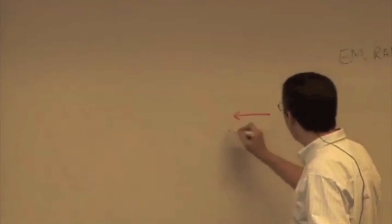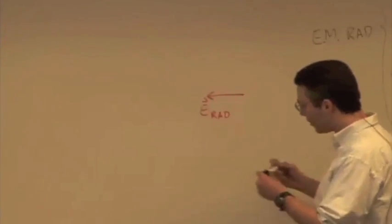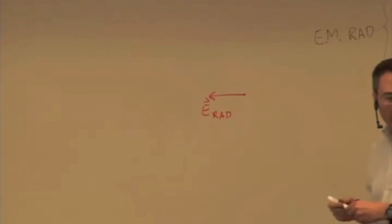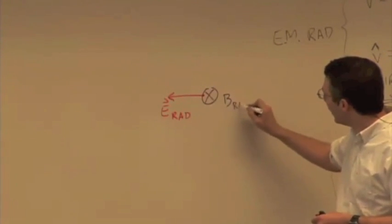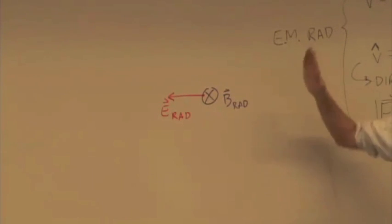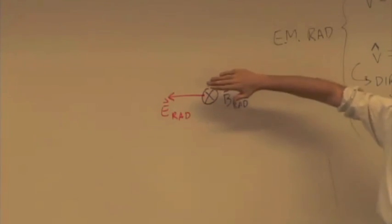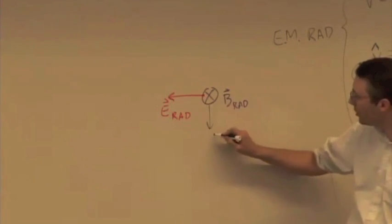The electric field is this way, and the radiative electric field, we should say. Negative x direction, radiative magnetic field pointing in the negative z direction. So, the direction of E crossed with the direction of B gives you the direction of propagation, which is downward.